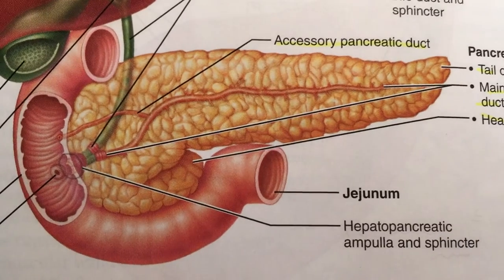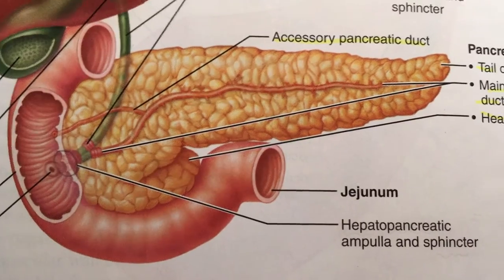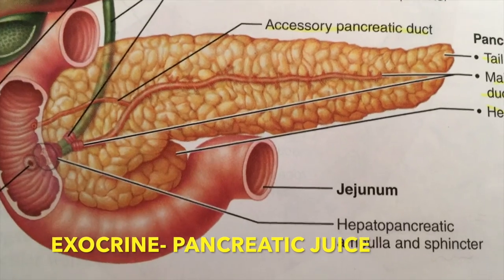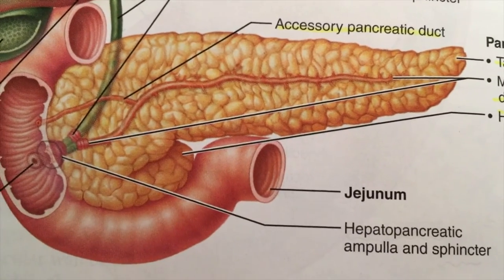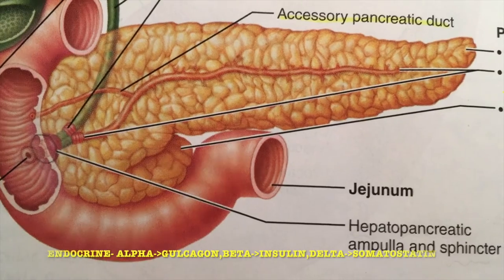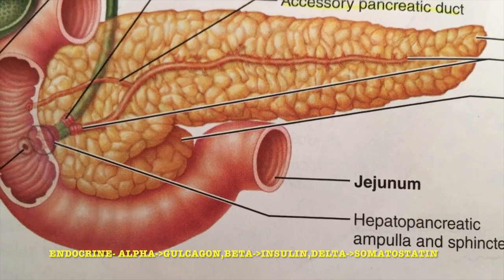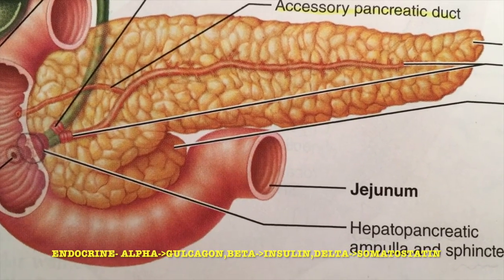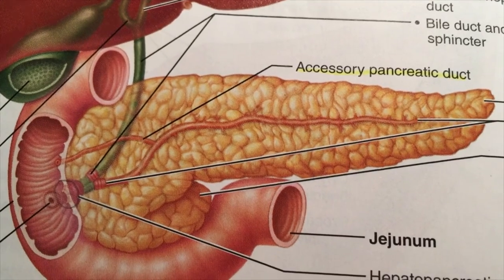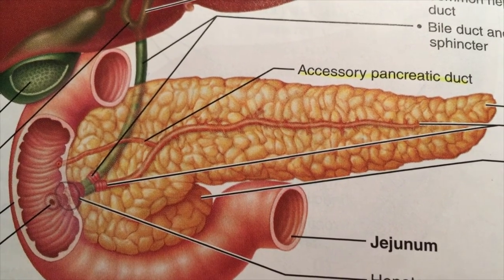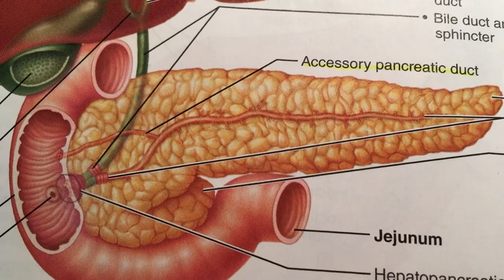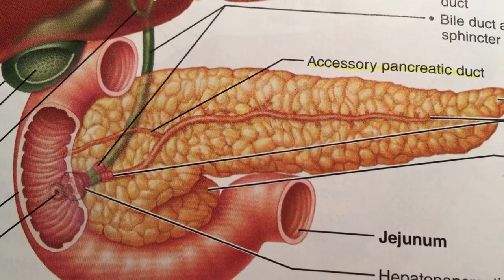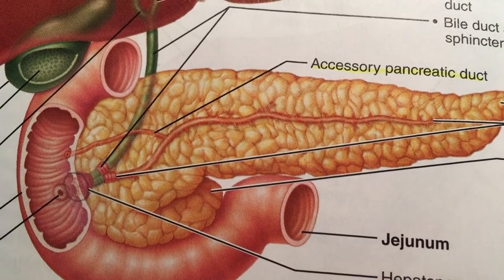The pancreas contains exocrine and endocrine parts. The exocrine secretes 1,500 milliliters of pancreatic juice into the duodenum daily. The endocrine secretes hormones directly into the bloodstream, including glucagon, insulin, and somatostatin. Glucagon increases when insulin is low. Insulin decreases the blood glucose level. Somatostatin decreases the blood flow to the GI tract.